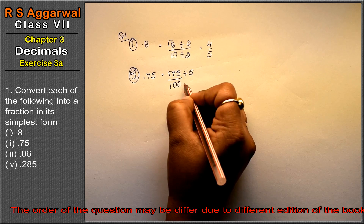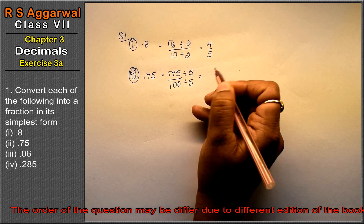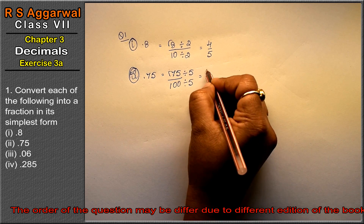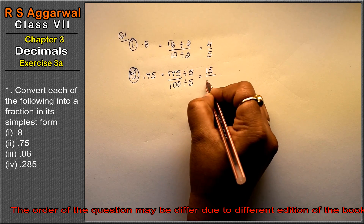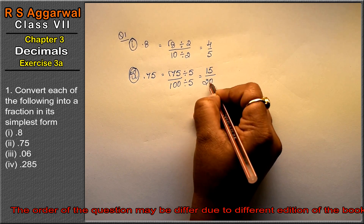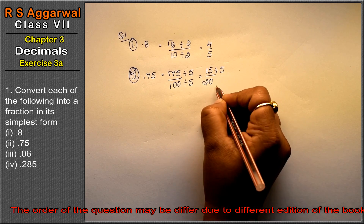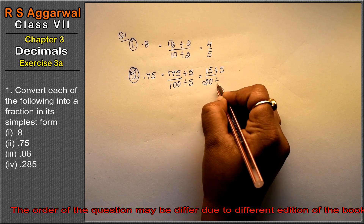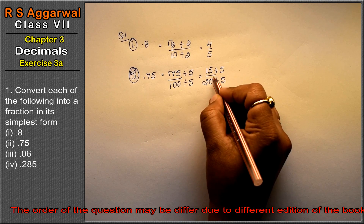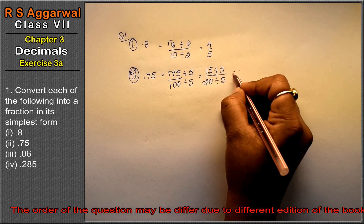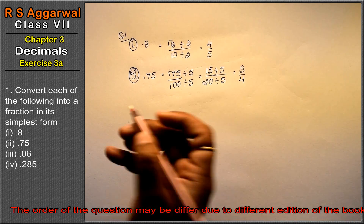Both numbers divide by 5: 75 divided by 5 is 15, and 100 divided by 5 is 20. Then divide by 5 again: 15 divided by 5 is 3, and 20 divided by 5 is 4. So 3 upon 4 is the answer.